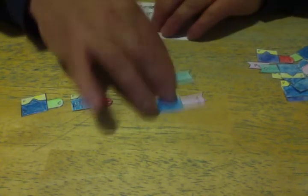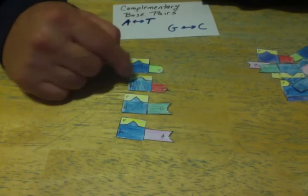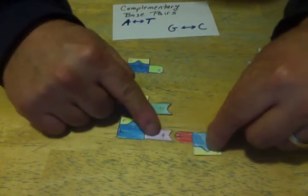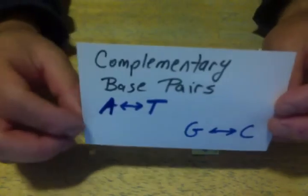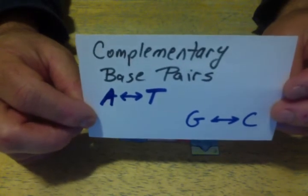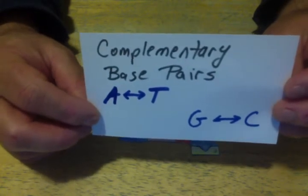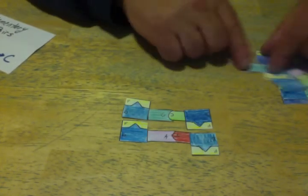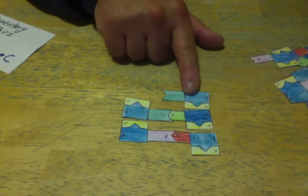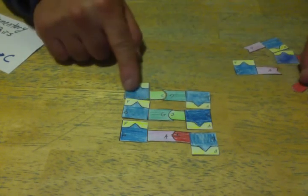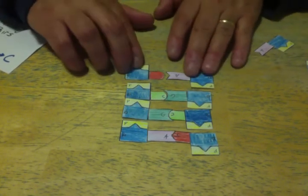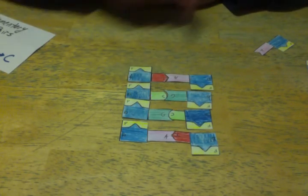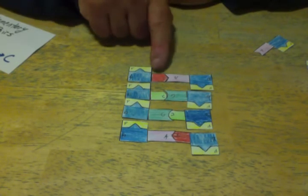The bases are also designed with different shapes so that only certain ones fit together. A and T can only fit together, and G and C can only fit together. We call these complementary base pairs: A can only base pair with T, and G can only base pair with C. The nucleotide on one side determines the only complementary base pair that can fit on the other side.